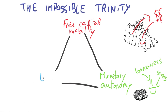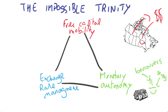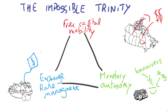And finally, the third thing that countries are going to want is exchange rate management, meaning that the exchange rate remains relatively fixed, because in that way the price for imports and exports stay the same, so the price of the bundles and goods stay the same.